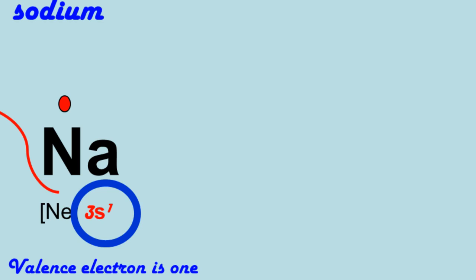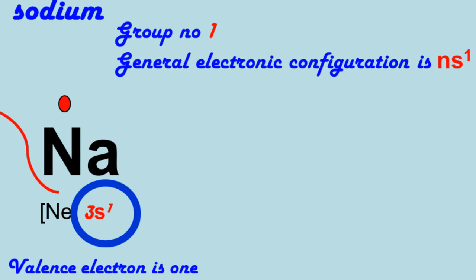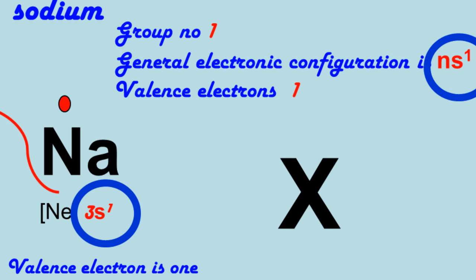Based on the same concept, we can draw Lewis dot symbols of any element of group number one of the periodic table. Its general electronic configuration is ns1. Valence electron is one because it has only one electron in its outermost shell. So write the symbol of the element of group one, and then represent one valence electron with the help of one dot.